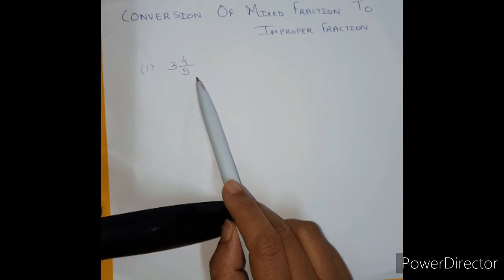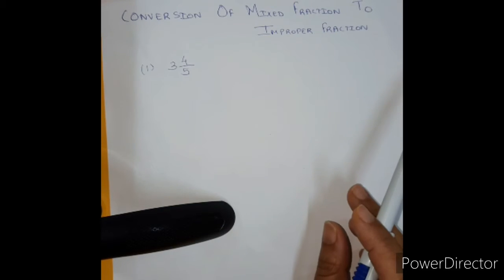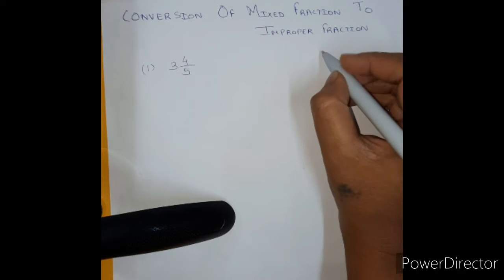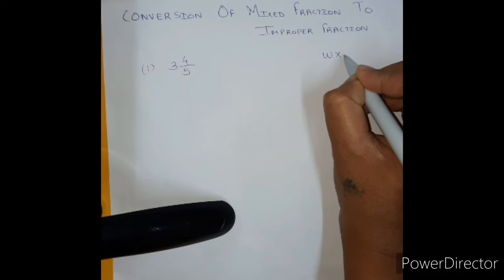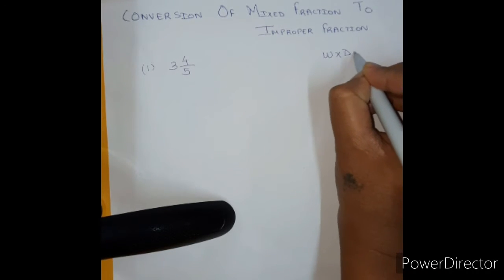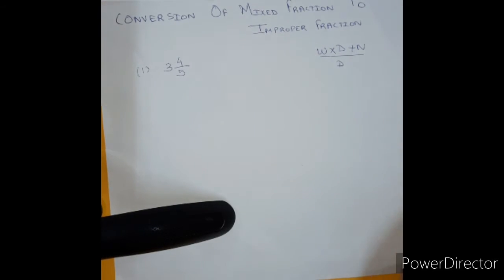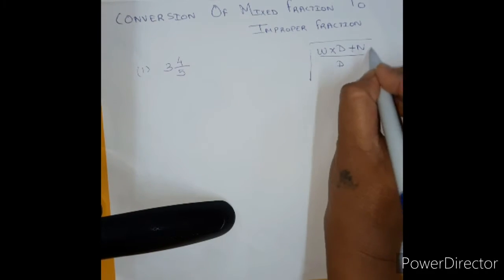We are going to convert this fraction into an improper fraction. Let's see how. Now you need to use a formula which is very important which is called W multiplied by D plus N upon D. This is very important.